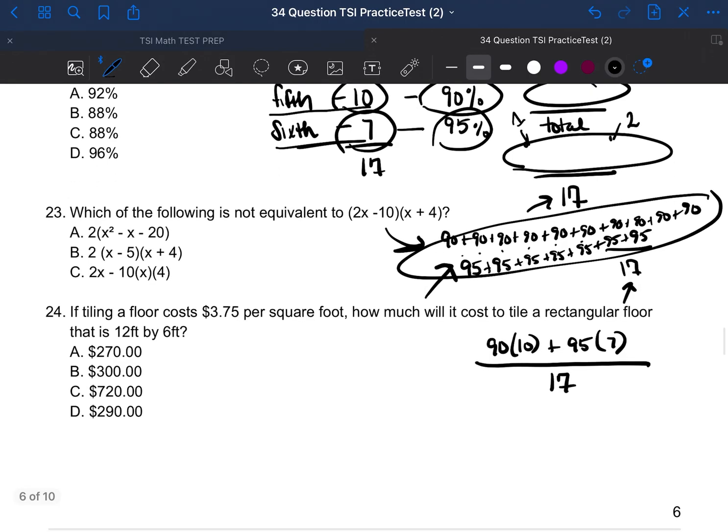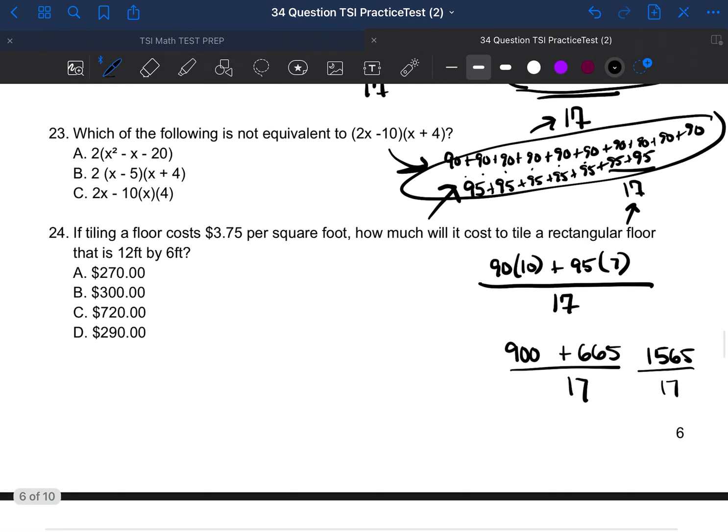So now all we have to do is add then divide. So 90 times 10, we're going to go ahead and use our calculator. Don't be ashamed of it because you are allowed to use it. 90 times 10 is 900. And then we're going to do 95 times 7 in our calculator. And it's going to be 665 over 17. 900 plus 665 is equal to 1565 divided by 17. And that's going to be 92.05.